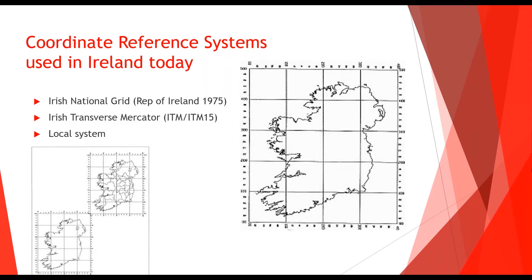Traditionally with Irish National Grid, our origin — our 0,0 point — as we can see in the larger image to the right-hand side on screen, was located just off the southwest coast of Ireland. When we updated to Irish Transverse Mercator, they needed to make it easily distinguishable from Irish National Grid, so what they did — as we can see in the bottom left-hand image — was shift the origin roughly 500,000 meters diagonally.